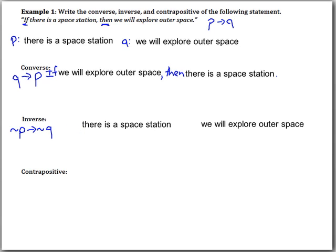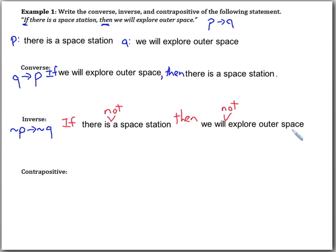We're going to make this a negative. So the inverse is: 'If there is not a space station, then we will not explore outer space.' We left it in the same order but added the negations.